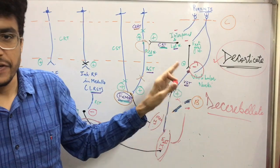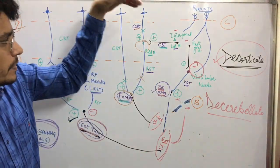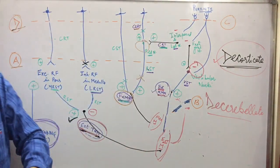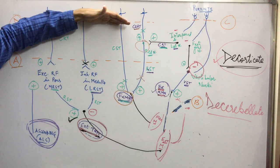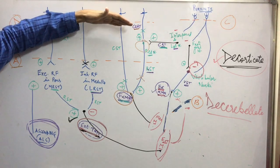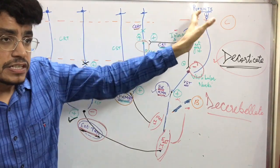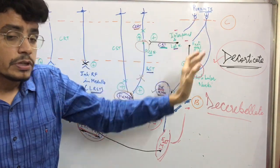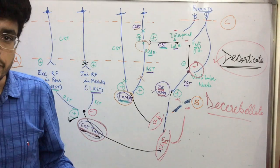So the vestibular nucleus will stimulate more and more extensor alpha motor neurons, and extensor gamma motor neurons are already getting stimulated. This is called decerebellate rigidity. Decerebellate rigidity is nothing but exaggerated decorticate rigidity — if a person suffering from decorticate rigidity also has the cerebellar action removed, then it will be more pronounced.